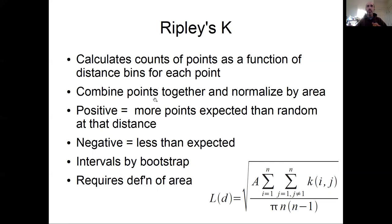And then you're going to do that for every point and combine those together, calculate averages and normalize that by area. So if that statistic is positive, it indicates that there's more points expected than by chance. And if it's negative, there are less points expected than by chance.